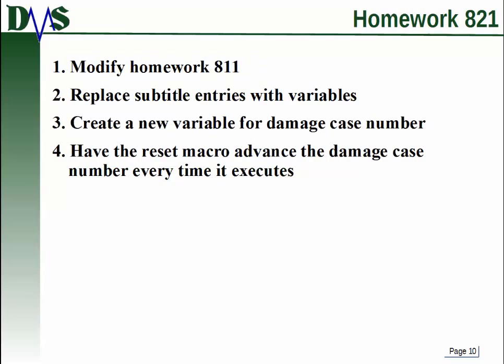So let's practice this. For homework number 821, I would like you to modify homework number 811. I give you a file to start with. I would like you to modify it and take that subtitle macro that was created and replace the entries there with variables. So instead of creating the subtitle with inputs, remove the inputs and instead have the subtitle feed from variables. So you have to create some variables, one for each line of the subtitle. And you'll actually update those variable values throughout the run file. And each time the subtitle runs, it will use the new values for the variables.